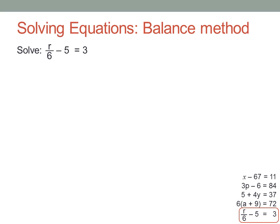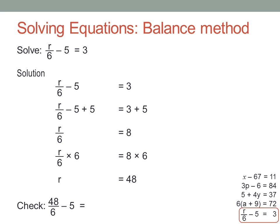Final example, r over 6 minus 5 equals 3. Well, normally I'd do the divide by 6 first, then the minus 5, so let's unwrap it by adding 5 first. R over 6 equals 8. Now times by 6 to cancel the divide. R must equal 48. Check the answer. 48 over 6 is 8, minus 5 is 3.